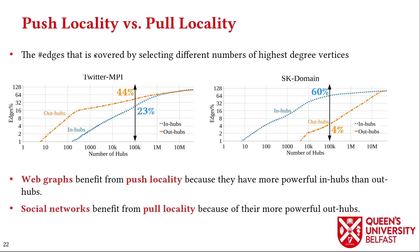Next, we investigate how structural differences of real-world graphs affect locality of push and pull traversals in SPMV. We show that in-hubs of web graphs have more edges than the same number of out-hubs. Therefore, web graphs do not benefit from push locality. But in social networks, out-hubs are more powerful than in-hubs, and social networks benefit from pull locality.